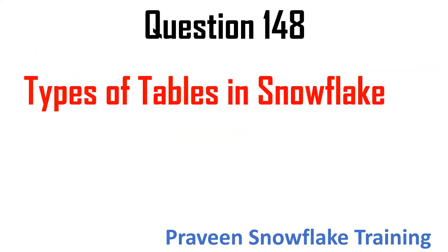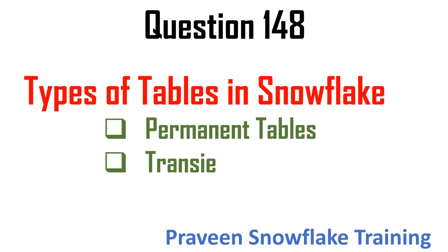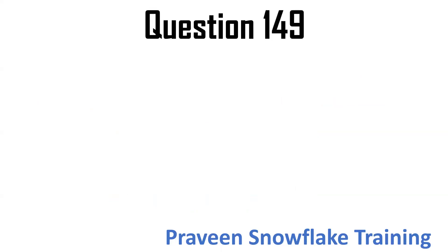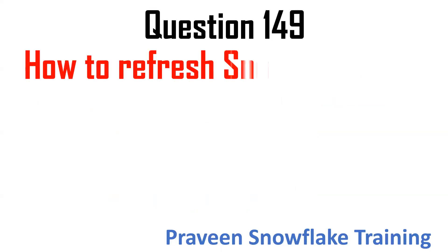Next question: what types of tables exist in Snowflake? We have permanent tables, transient tables, and temporary tables — these are internal tables. We also have external tables. The main focus is on permanent tables, transient tables, and temporary tables.